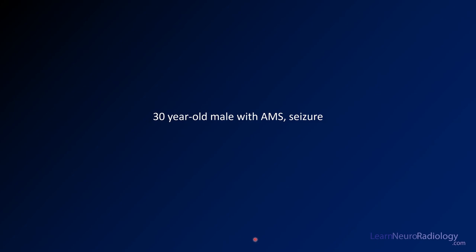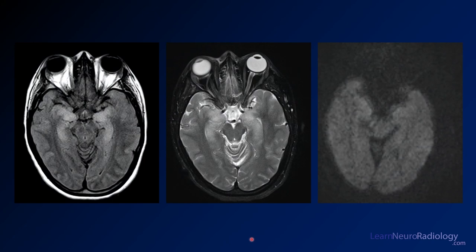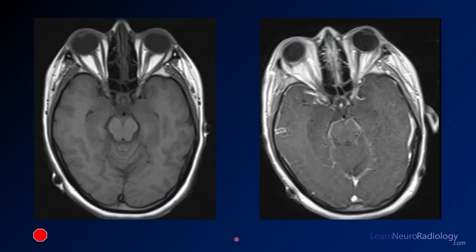We're going to start with a 30-year-old male with altered mental status and a seizure. Here you see some images from a patient who's altered. We have a FLAIR, a T2, and a diffusion. You want to look at the FLAIR pretty closely. When you're talking about someone with encephalitis, you want to think about those medial temporal lobes. You can confirm that abnormality on the T2. The diffusion is pretty normal. Here's your pre and post contrast — pre-contrast on the left, post-contrast on the right. You're not seeing a lot of enhancement there.